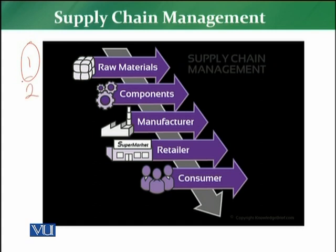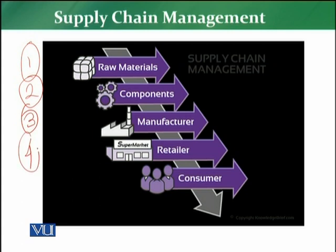The components are what help assemble the final product. For example, in the supply chain of electronics, the first stage is raw material, which leads to different components. The third part of the supply chain is the manufacturer, who assembles the components and raw material. The manufacturer then sells to either an importer, wholesaler, or distributor.